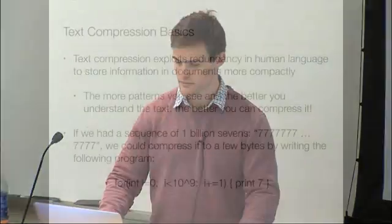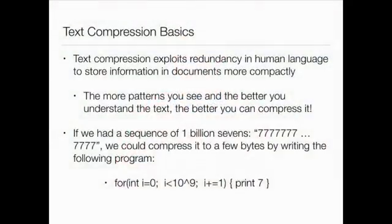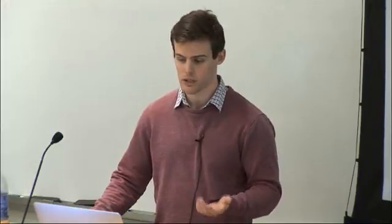If we have a source text, we're asking how many more bits of information — given that source text — are needed to specify the target text, which is the translation. The main goal of text compression is to exploit redundancy in human language to store documents much more compactly. The more patterns you see and the better you understand the text, the better you can compress it.